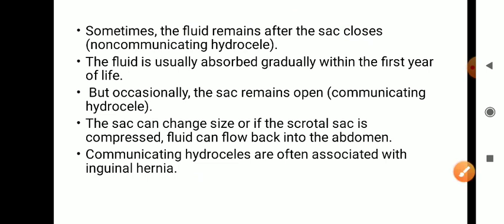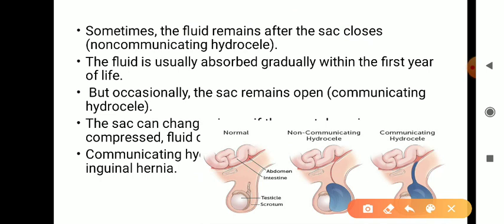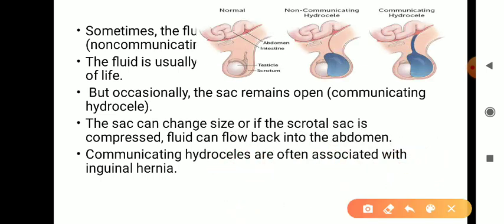Now we discuss communicating and non-communicating hydrocele. In non-communicating hydrocele, the testicle descends through the processus vaginalis, which then closes after descent. Fluid accumulates in the scrotum but the processus vaginalis is sealed — this is non-communicating hydrocele. In communicating hydrocele, the processus vaginalis remains patent or open after descent, allowing fluid to flow into the scrotum — this is communicating hydrocele.